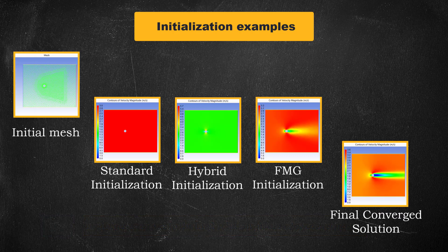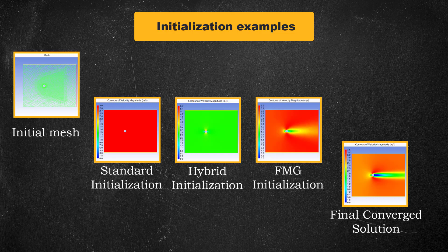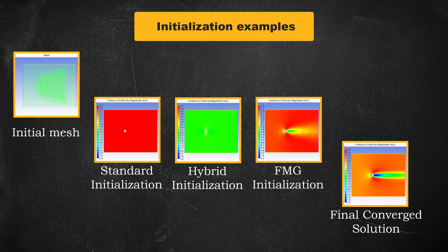From the examples, it is evident that the FMG initialization method provides a more realistic initial guess to the actual solution. Hybrid, on the other hand, provides a slightly less realistic initial guess than FMG, but better than the standard initialization method.